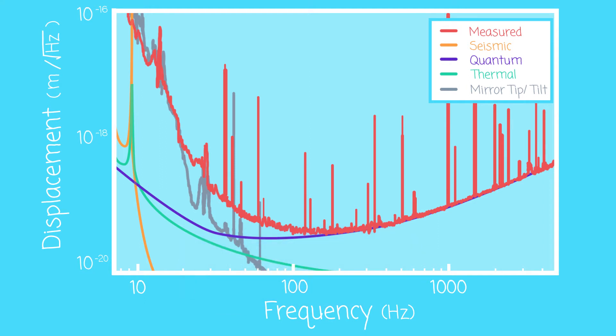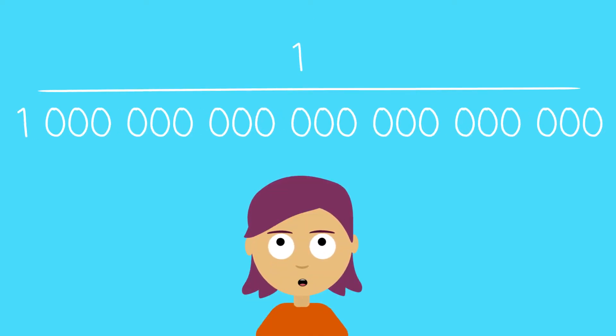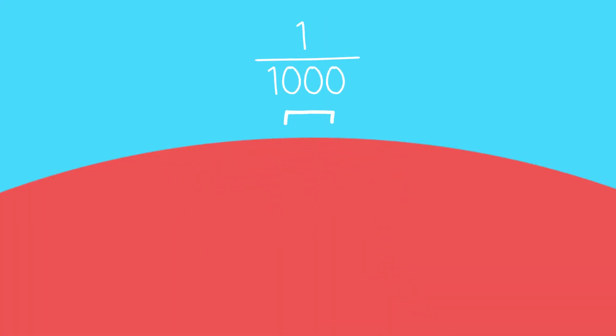The sensitivity of LIGO is astounding and is able to detect relative changes in the length of one part in a billion trillion. That's equivalent to the mirrors moving by just one thousandth the width of a proton.